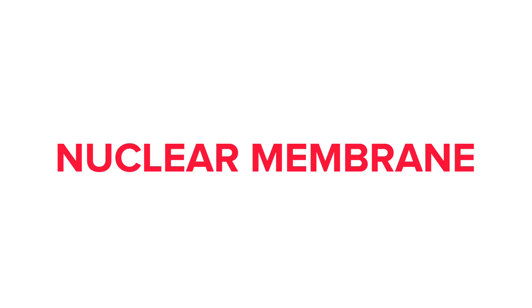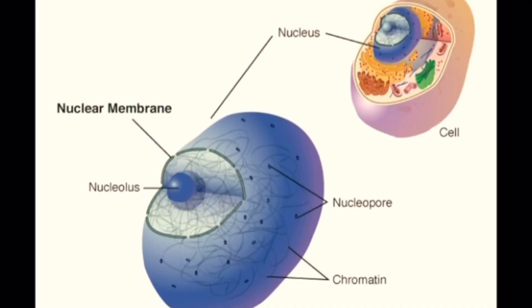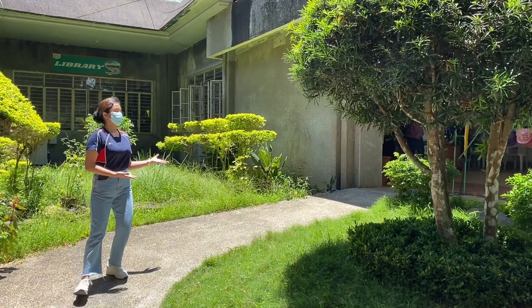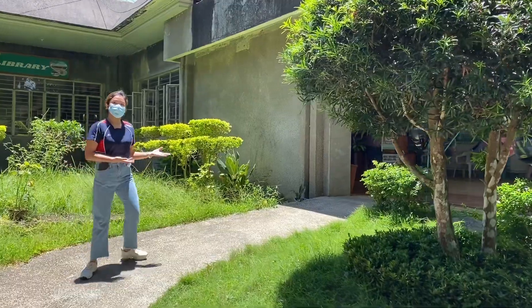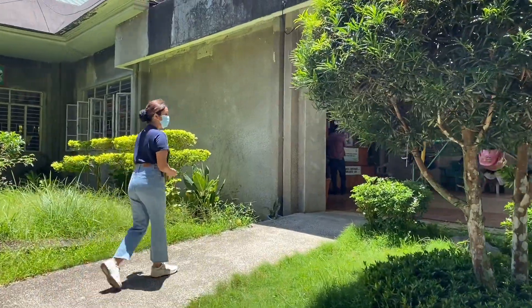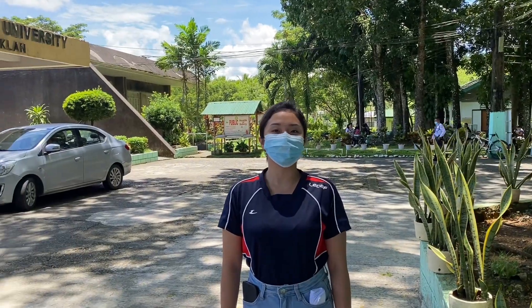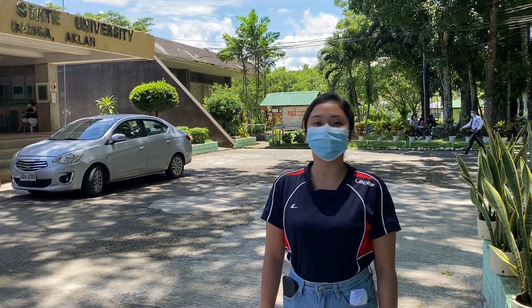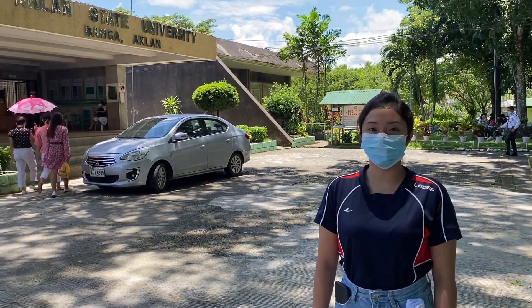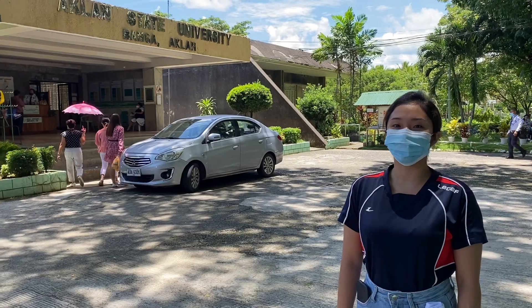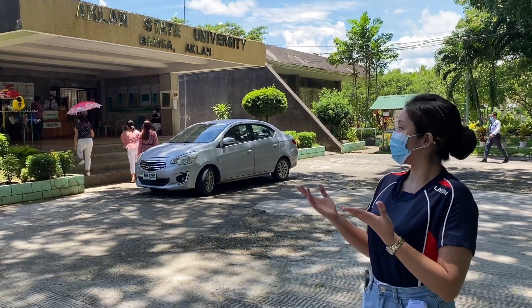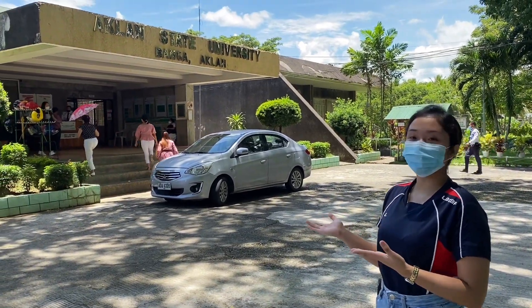The nuclear membrane acts as a barrier that separates the content of the nucleus from the cytoplasm. The dean's office represents the nucleus, and the building that surrounds the dean's office is comparable to how the nuclear membrane works inside the cell.